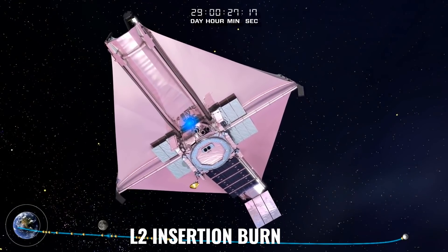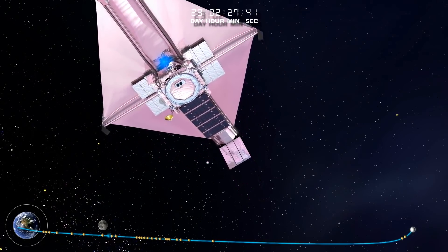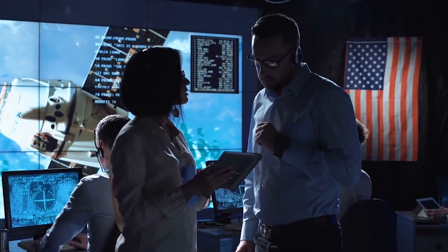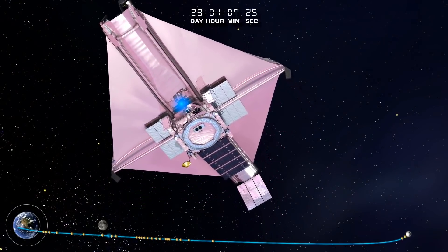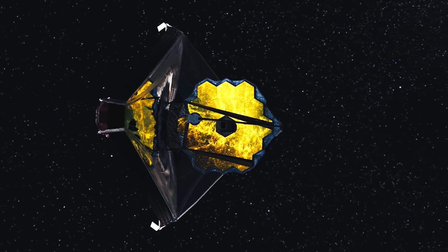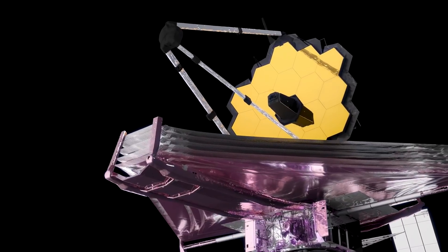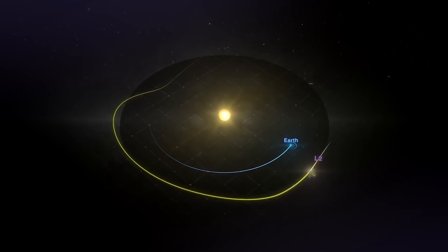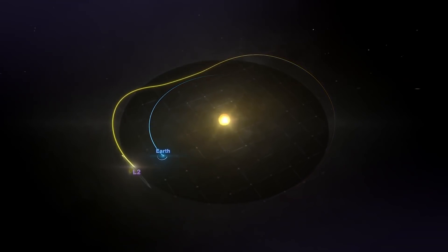L2 insertion burn. Mid-course correction burn MCC2 begins L2 insertion. A series of activities to plan and execute MCC2, the insertion burn for Webb's L2 orbit. MCC2 corrects any residual trajectory errors and adjusts the final L2 orbit. The James Webb Space Telescope is launched on a direct path to an orbit around the second Sun-Earth Lagrange point, L2, but it needs to make its own mid-course thrust correction maneuvers to get there. Webb is orbiting L2. Orbit insertion complete. Webb is orbiting L2 in a halo orbit.